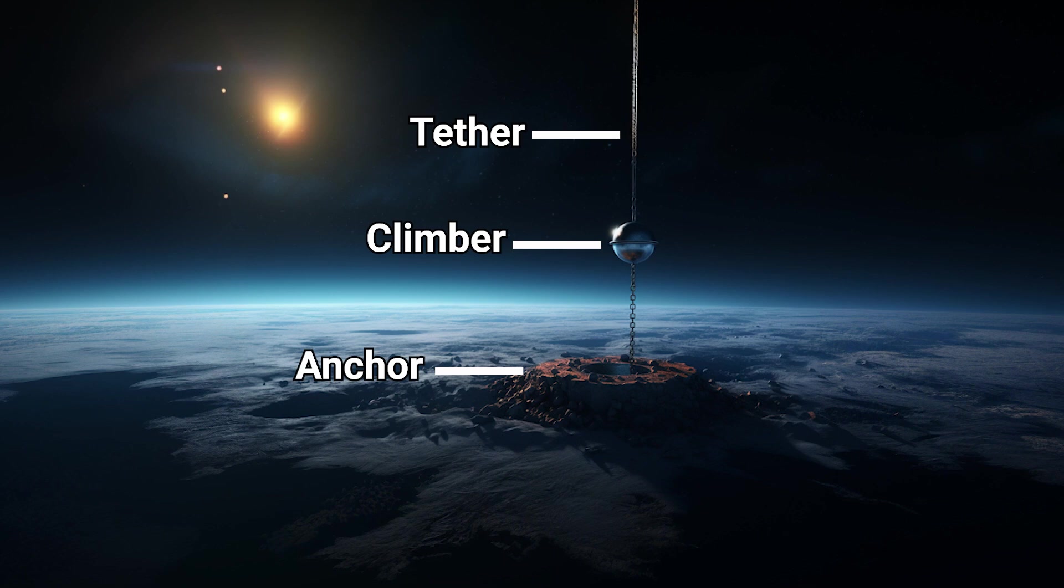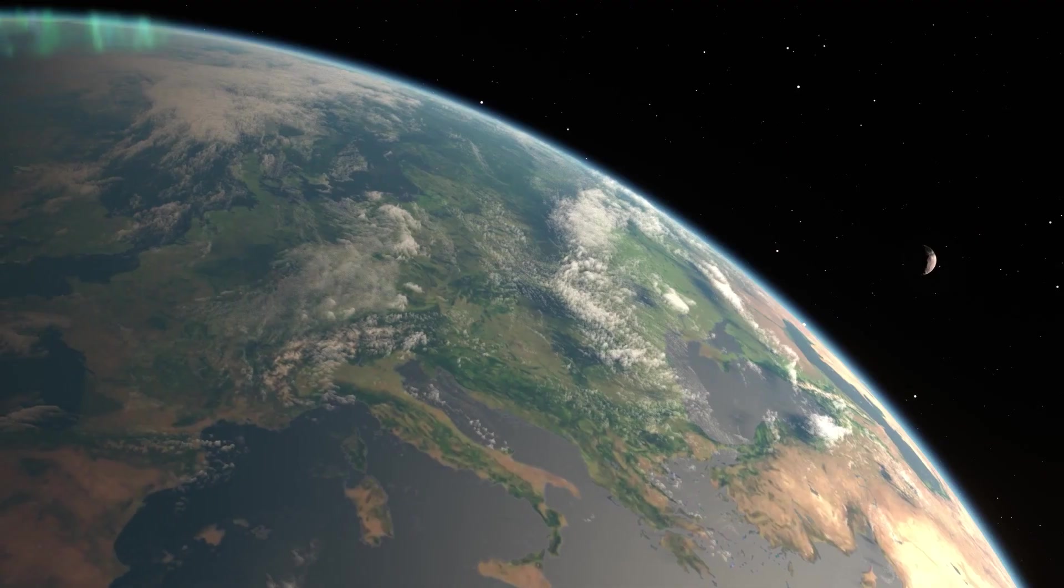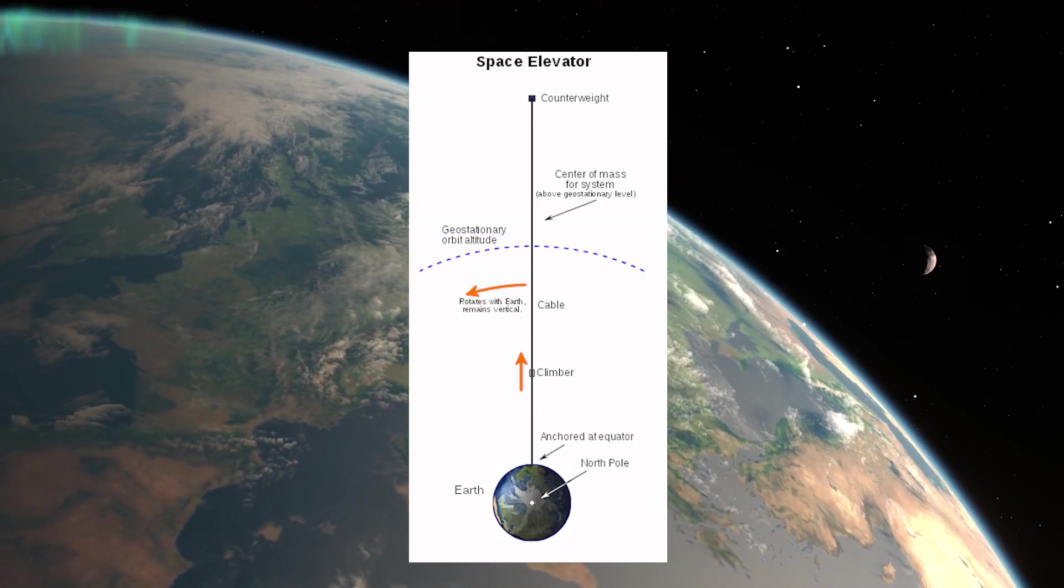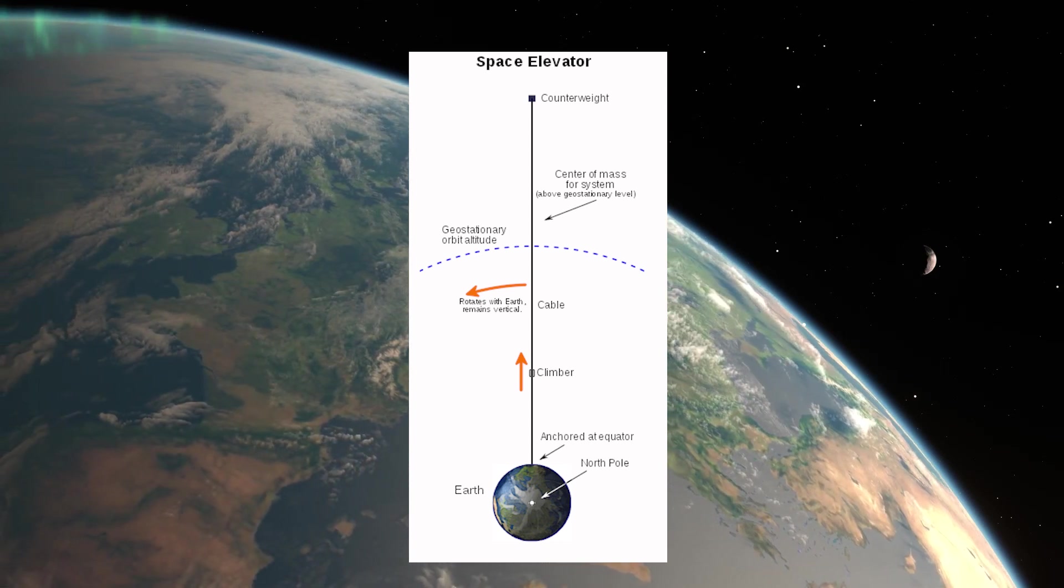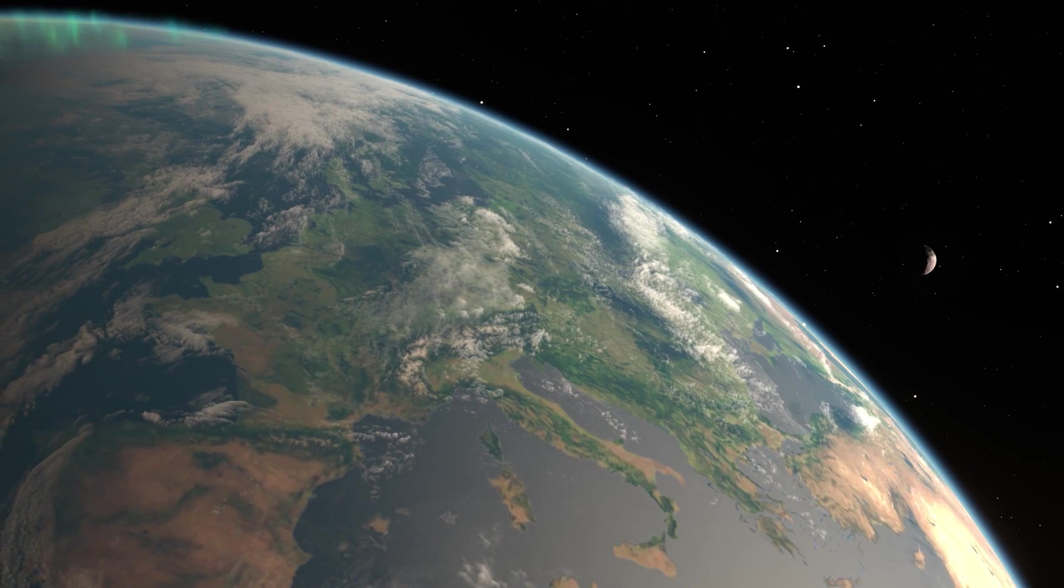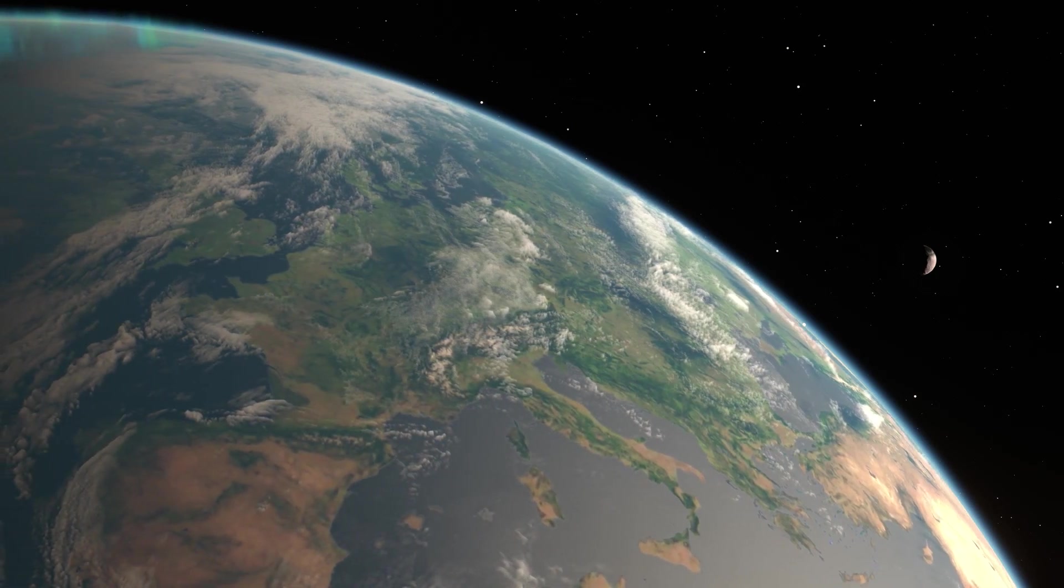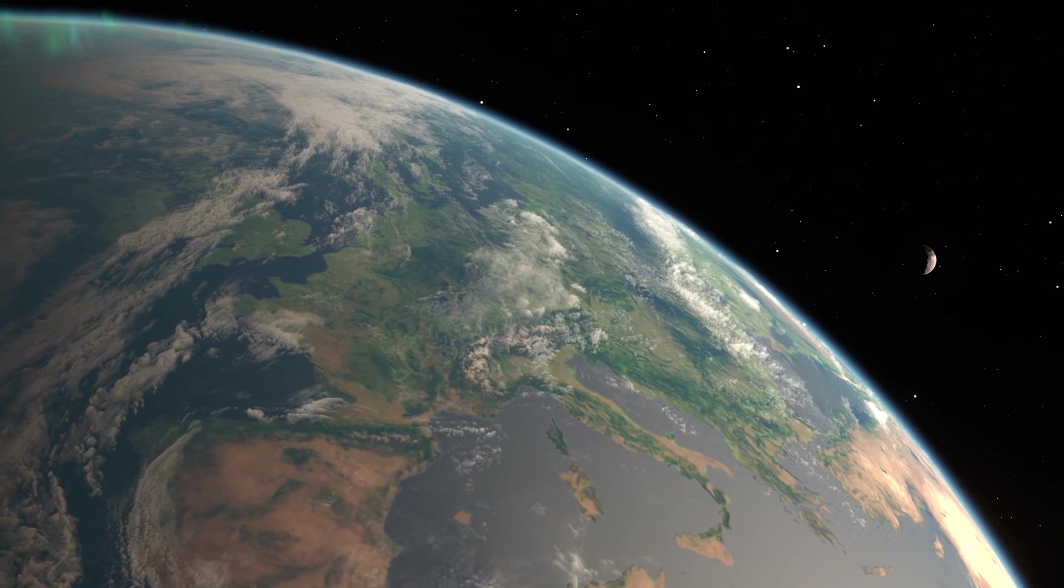So now that we know what it could look like, how would it work? The space elevator remains upright due to its counterweight rotating at high speeds above the Earth. Let's break it down. Think of swinging a rope with a weight at the end in a circle. If you swing it fast enough,